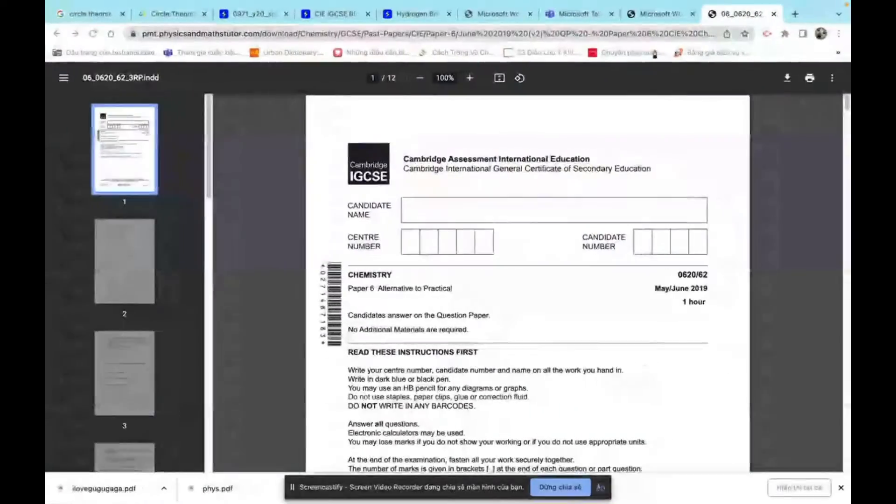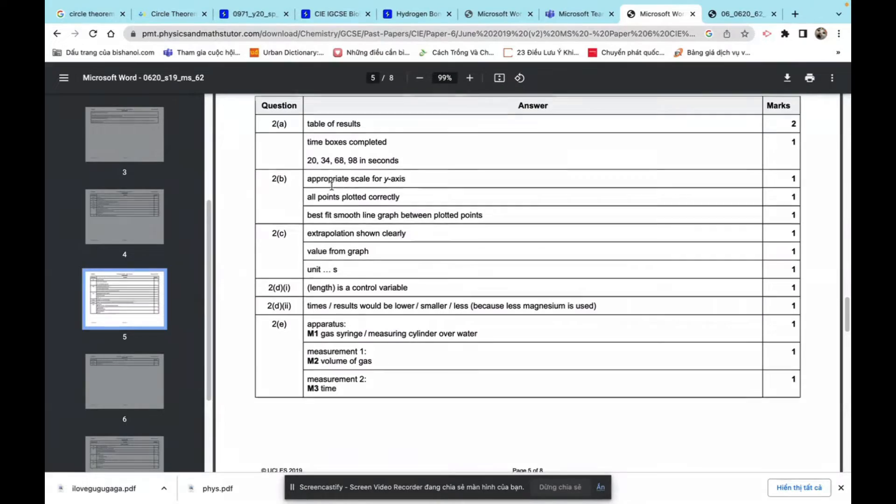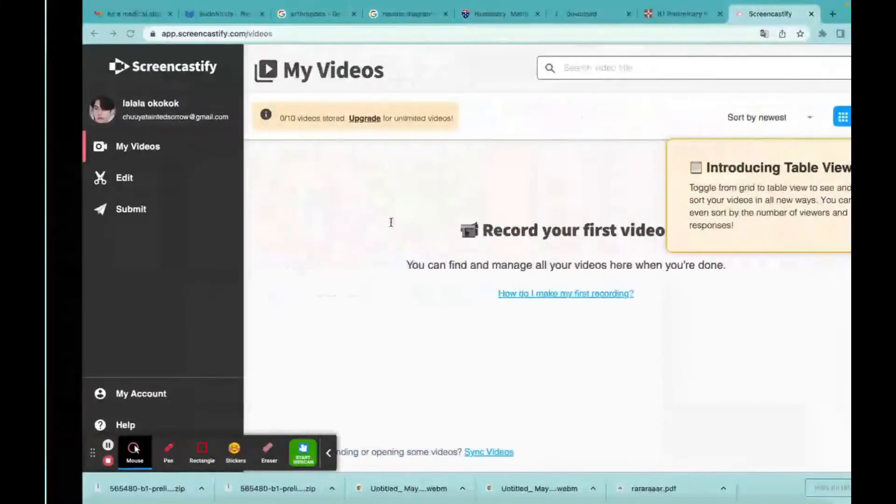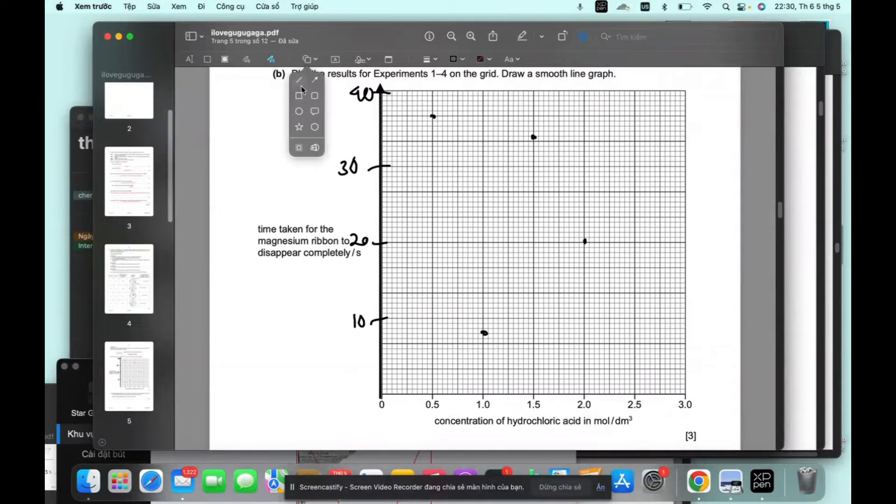Let's see what the mark scheme would draw. Best fit smooth line graph between plotted points. I would say this is a very, very inaccurate graph, but this is done in a very quick time.